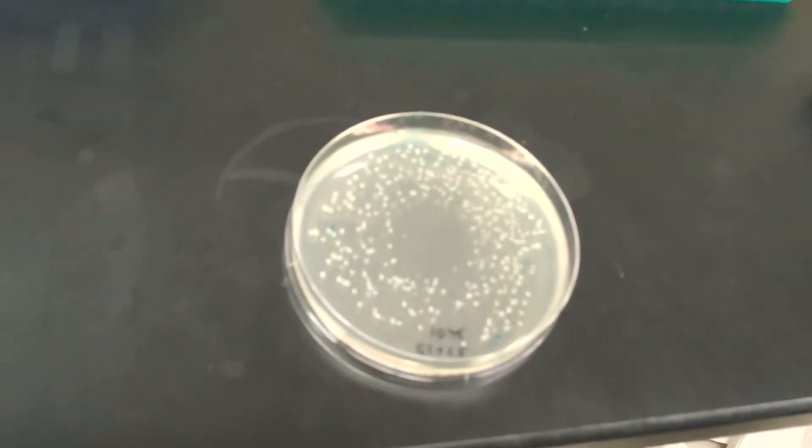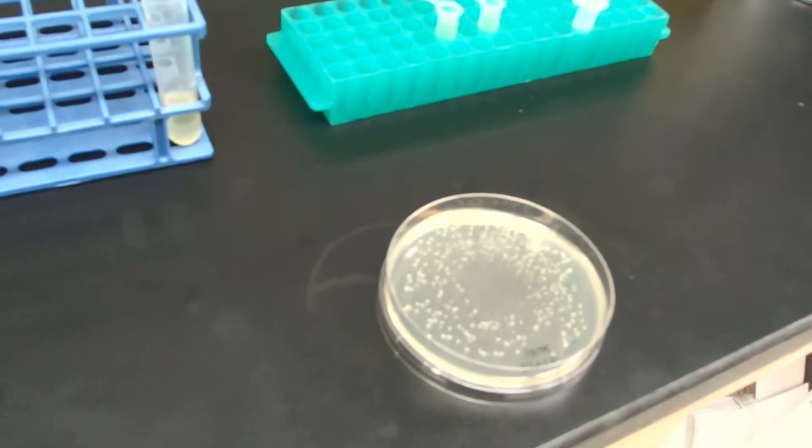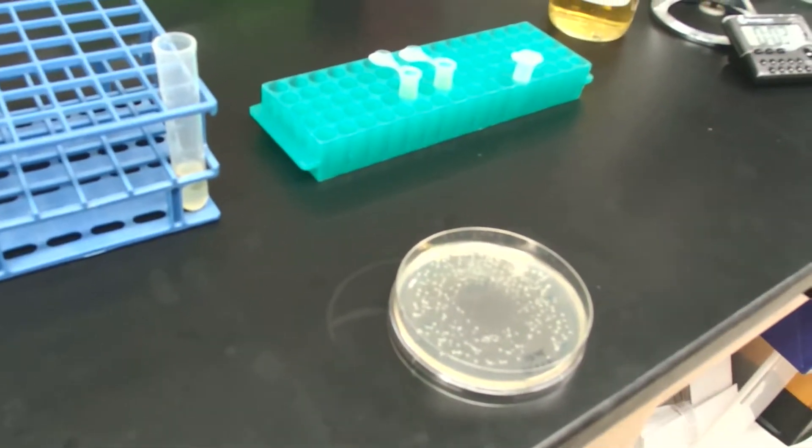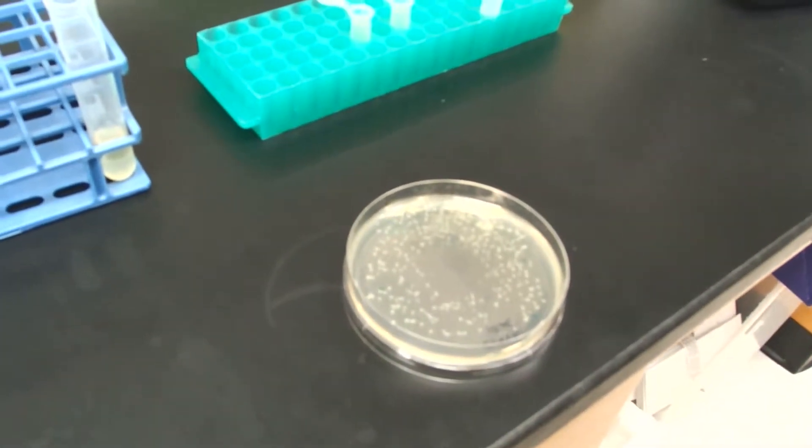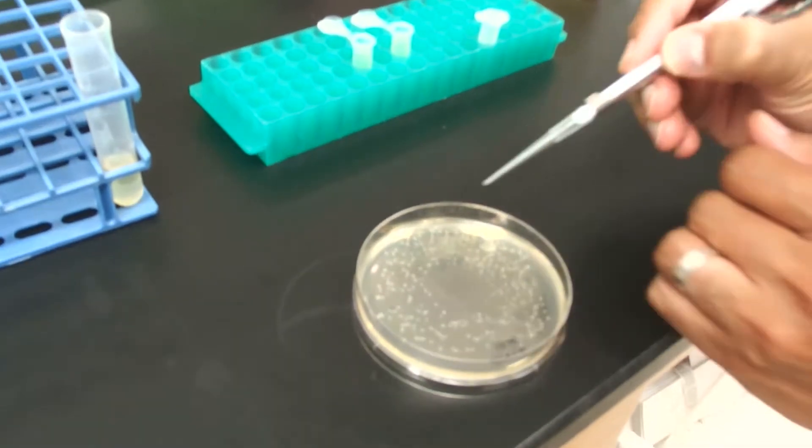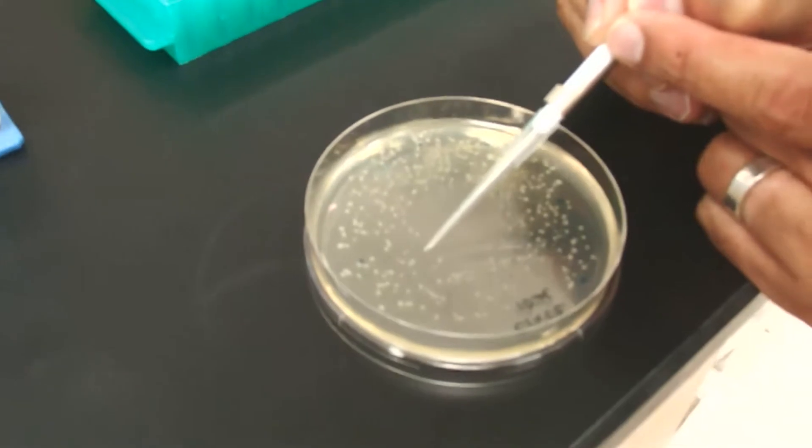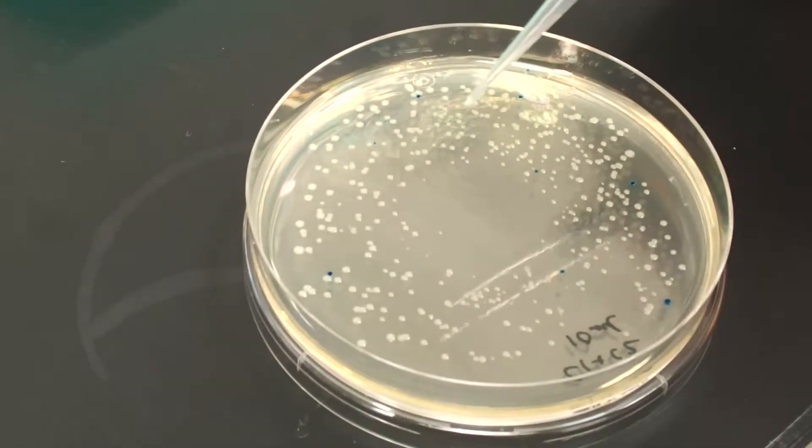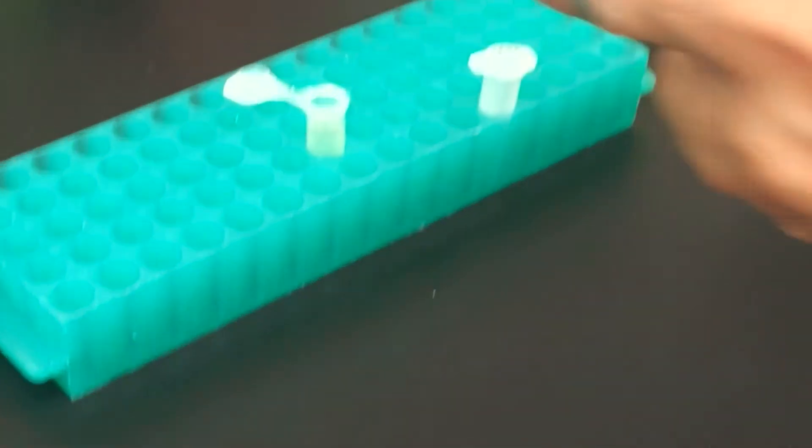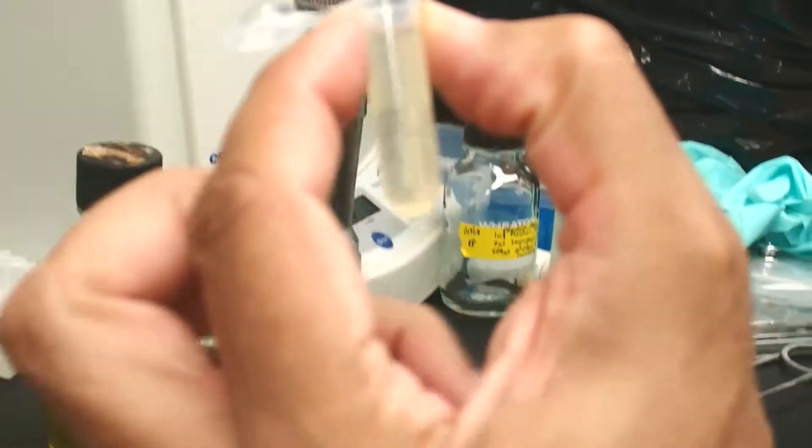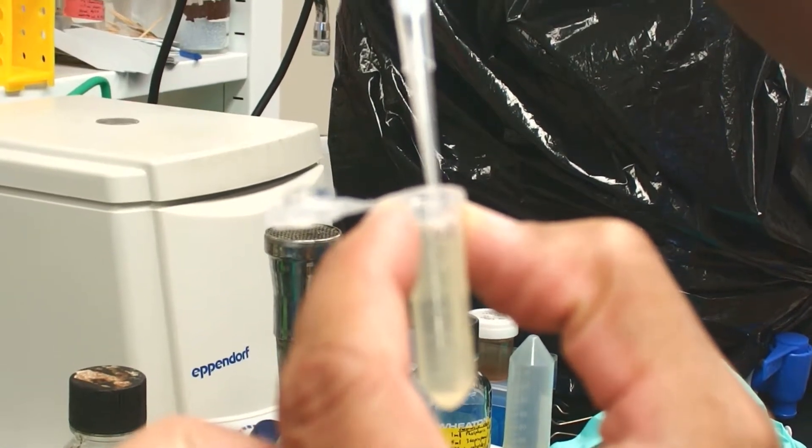The way that we're going to inoculate the 2 milliliter tubes is we're going to find a well-isolated colony. We're going to put a pipette tip on a P200, and we're going to scrape off one well-isolated white colony so that we can see it. So I no longer see it on the plate, and I got it onto this tip. Then we're going to come over to our 2 milliliter tube, and we're going to pipette up and down a few times until you see the bacteria move into that tube.